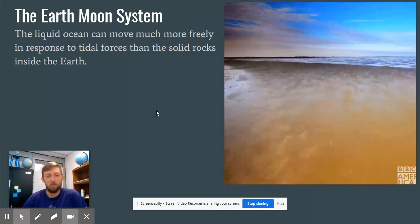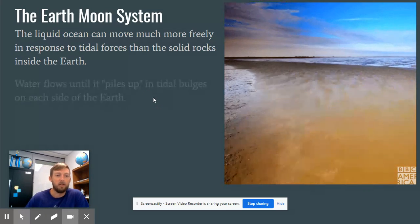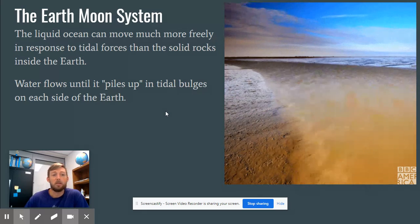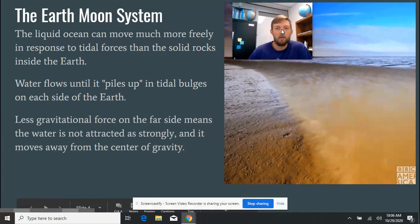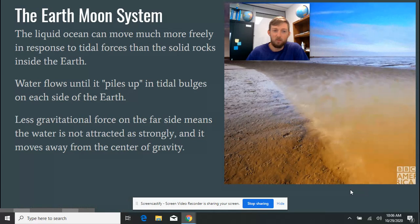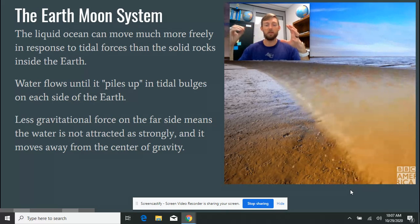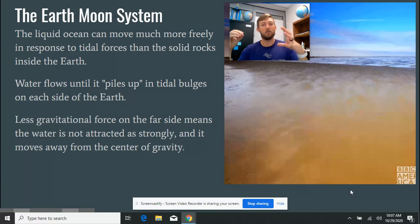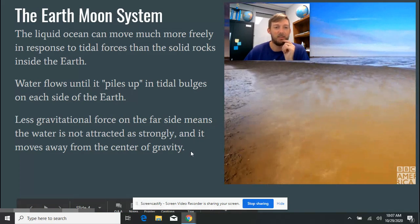Now, the Earth and rock is not pulled a lot, 20 centimeters. But water is affected a lot more because it's free to move around. And so that's how we get the tides with these tidal forces. Water flows until it piles up in tidal bulges on each side of the Earth. Less gravitational force on the far side means that the water is not attracted as strongly, and it moves away from the center of gravity. So you've got these two different areas that are really feeling these tidal effects.